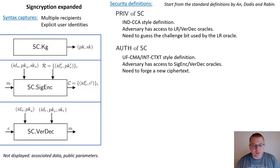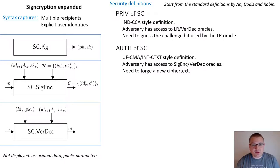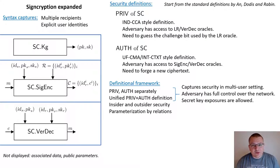Recall the standard security definitions for signcryption as defined by An, Dodis, and Rabin. The privacy of signcryption is an IND-CCA-style definition, where the adversary is given access to the left-or-right signcryption oracle and to the unsigncryption oracle, and must guess the challenge bit. The authenticity of signcryption is a UF-CMA or ciphertext integrity-style definition, where the adversary is given access to the signcryption oracle and the unsigncryption oracle, and is required to forge a new ciphertext. We provide separate definitions of privacy and authenticity, and also unify them into a single security definition capturing both simultaneously.